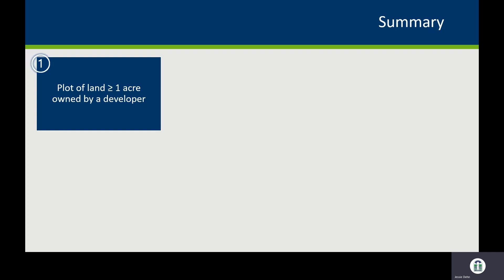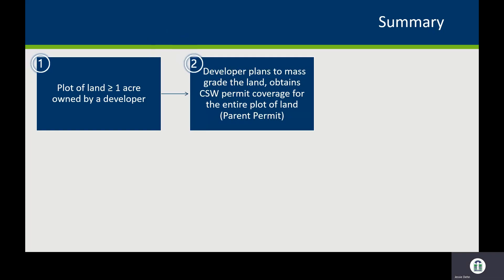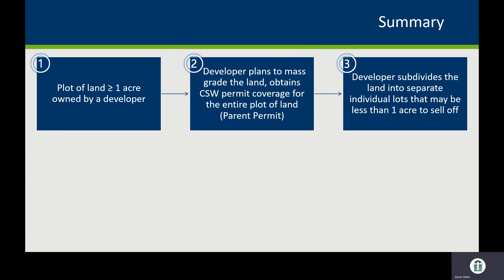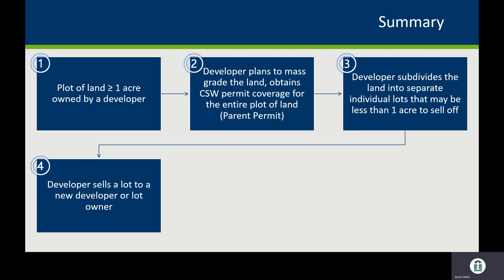As a summary of the steps: when someone has a plot of land greater than or equal to one acre and wants to develop it, they obtain permit coverage before they start — that's a big thing. Some people start working and then decide to plot it out and get coverage, but you should have coverage before you start land disturbance. That permit they pull is what we refer to as a parent permit. As the developer subdivides out the lots, they fill out the subdivision registration forms with the new owner.